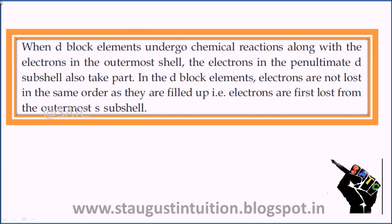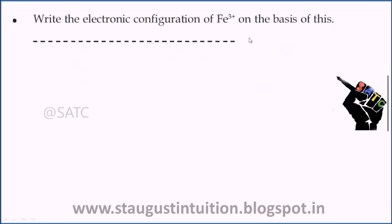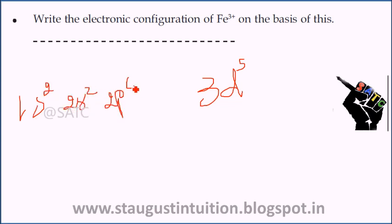In D-block chemical reactions, the penultimate D sub-shell also takes part. 4s and 3d — that's why it's a penultimate D sub-shell. In D-block elements, electrons are not lost in the same order as they are filled up. Electrons are first lost from the outermost S sub-shell. For Fe3+, the configuration is: 1s2, 2s2, 2p6, 3s2, 3p6 — there is no 4s2, only 3d5.